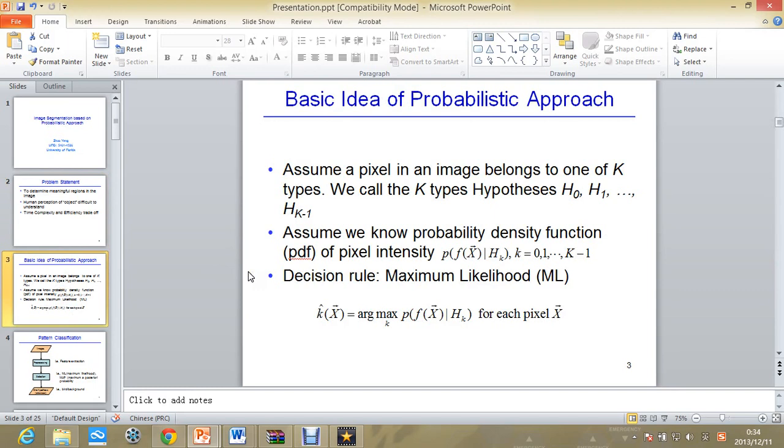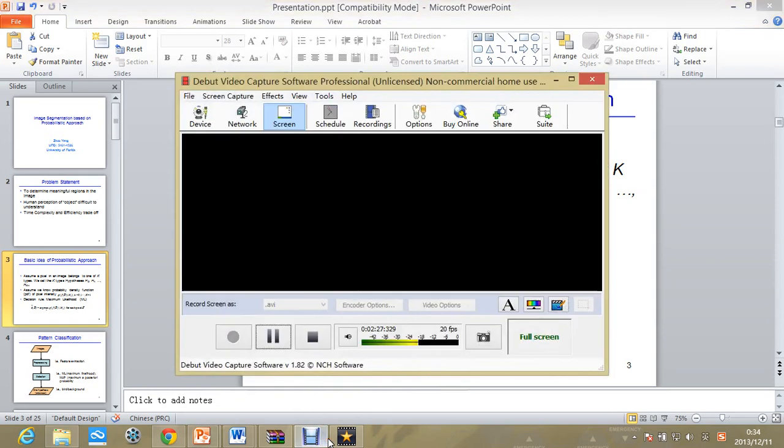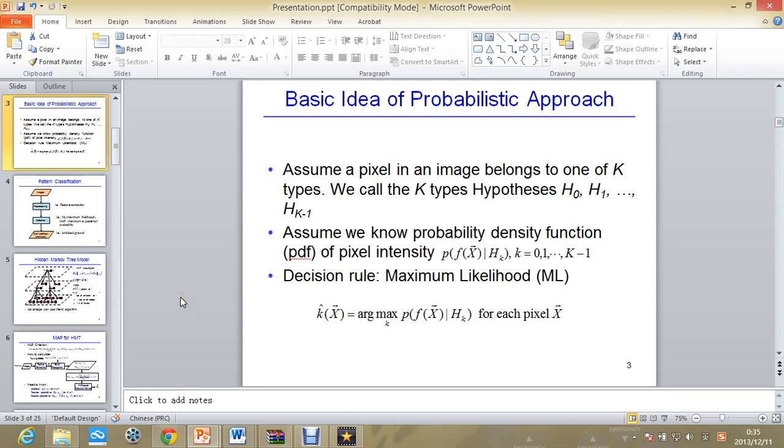So how does this image segmentation work? In an image, a pixel belongs to one of k-types, and the k-types can also be called hypothesis. At this time, if we know probability density function of pixel intensity, then the program can make the decision by maximum likelihood and segment the image into regions that are required.